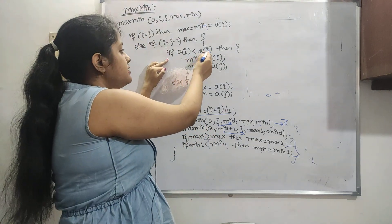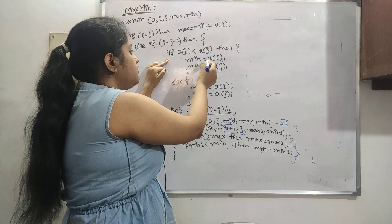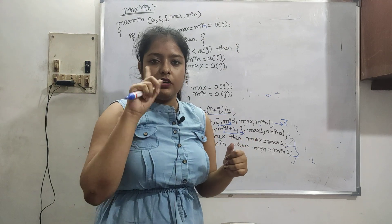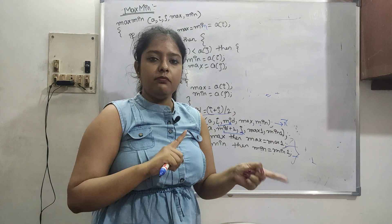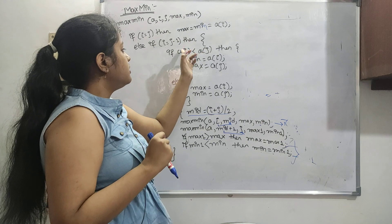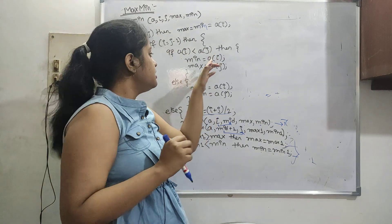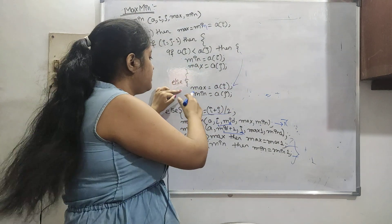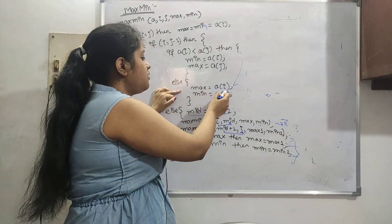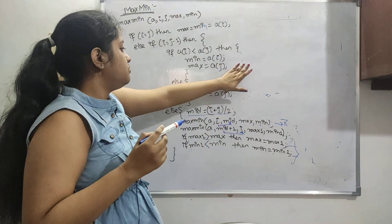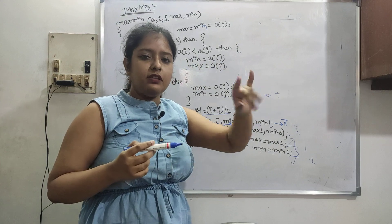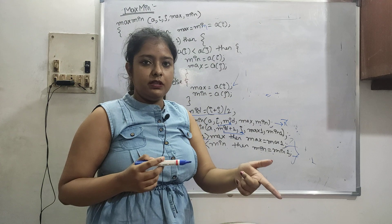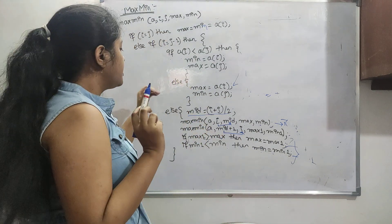Else if i equals j minus 1, there are two elements. If A[i] is less than A[j], then mean equals A[i] and max equals A[j]. If A[i] is greater than A[j], the vice versa: max equals A[i] and mean equals A[j]. So we just compare the two elements.